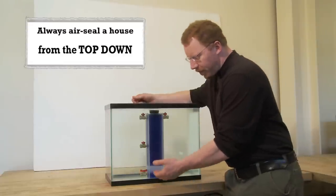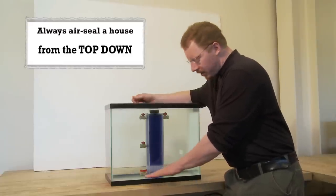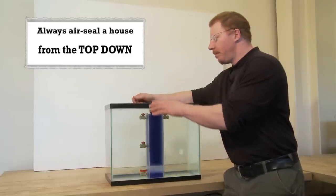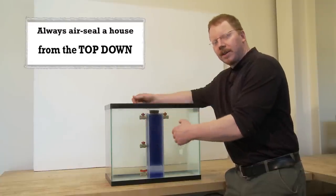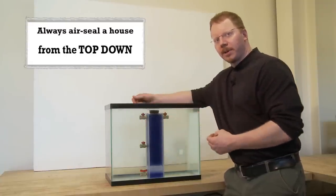If you air seal from the bottom first, you're making a tighter house, but you're still leaking out of the top and your chances of backdrafting an appliance or causing other problems are much greater.